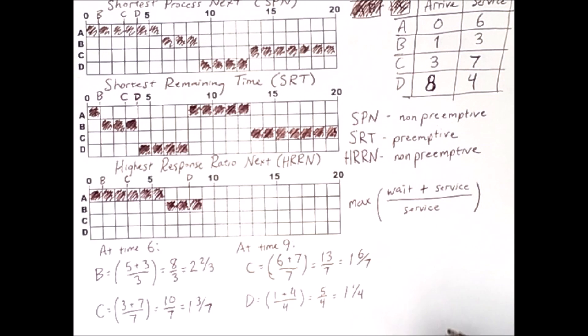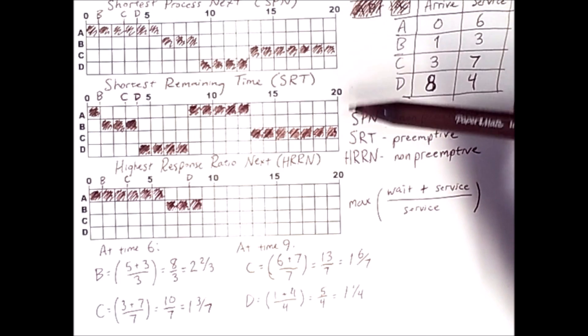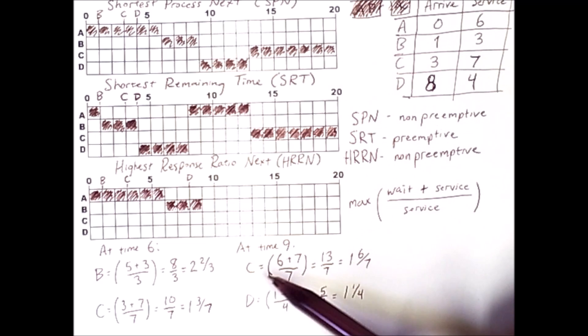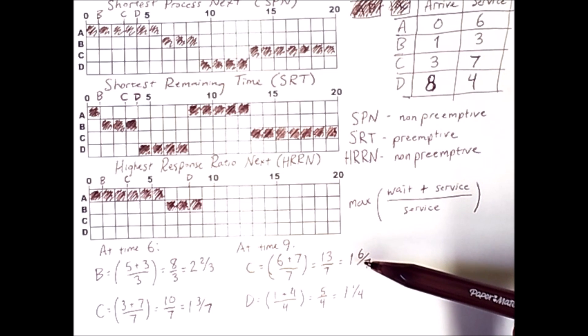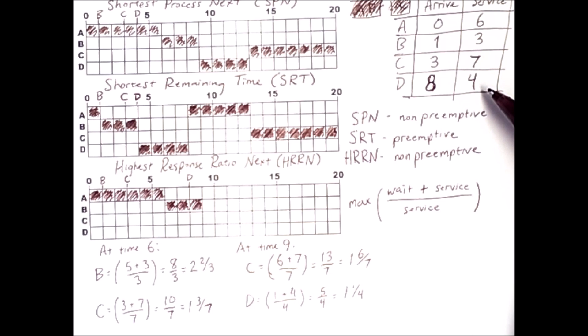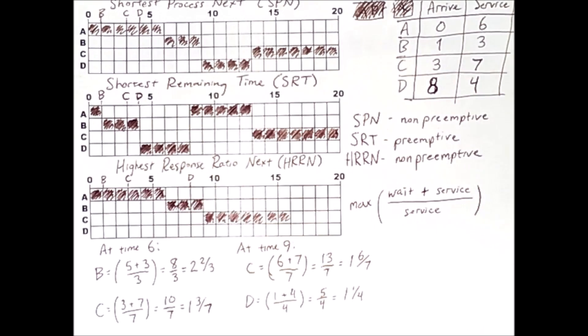Now this is interesting in contrast to SPN and SRT because C has a long service time, but because it had been waiting for a long time it actually gets to run before D which has a relatively shorter service time, followed by D, the only process left.